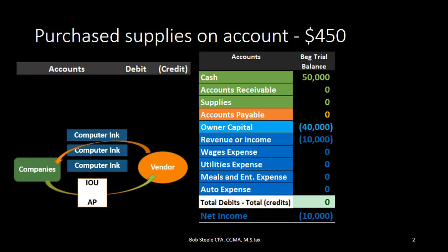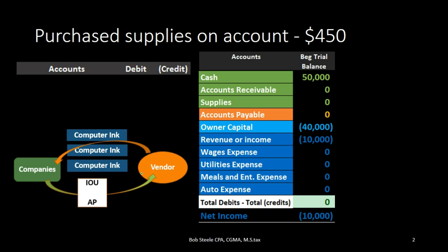Hello. In this lecture we're going to record a transaction related to accounts payable in which we're going to purchase supplies on account. We are the company here, purchasing supplies — in this case computer ink — from the vendor, not paying cash. What we're going to be paying with is an IOU, that IOU being the accounts payable account.